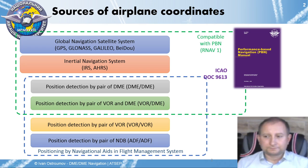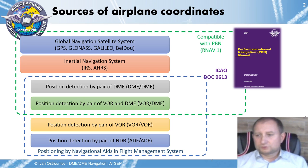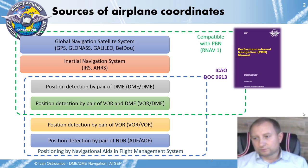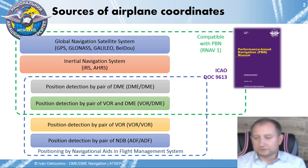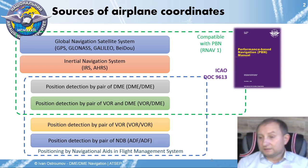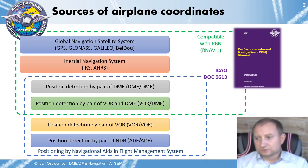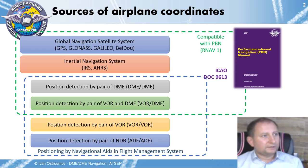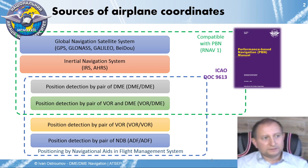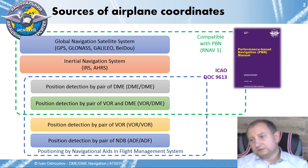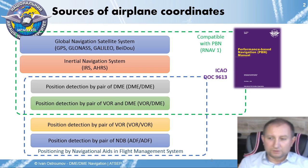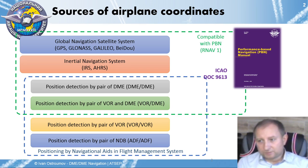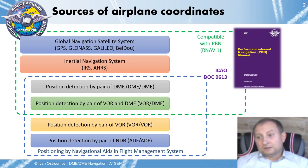First of all, let's talk about the main positioning sensors on board of aircraft. GNSS, or Global Navigation Satellite System, is considered as a primary sensor of aircraft location. That's why we consider GPS, GLONASS, GALILEO, BeiDou receivers, or if it is a modern aircraft, we can talk about a multi-constellation positioning approach on board.